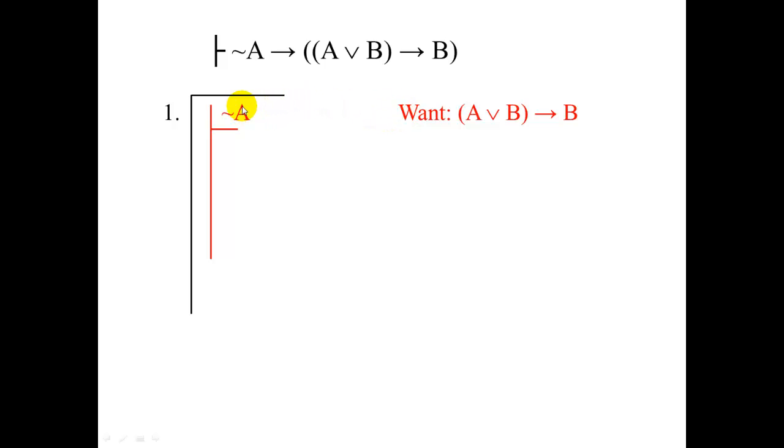Still, however, we can't do anything with not A. It's just sitting there all alone like it's at a party where it doesn't know anyone. So what can we do? Well, fortunately, our want line is still a conditional. So this suggests a natural strategy. We'll just assume the antecedent of this conditional and want the consequent. Like that.